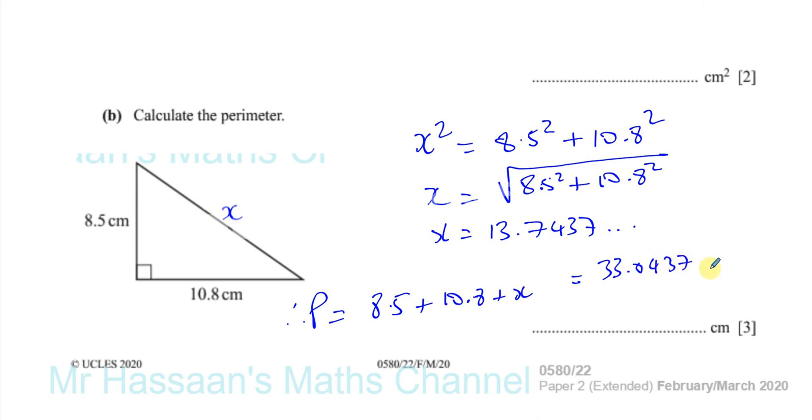33.0437. Now, answers which are not exact must be rounded to three significant figures in general. So this is just a length, so it's 33.0. You should write the 0 to show that it's a rounded answer.